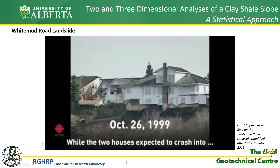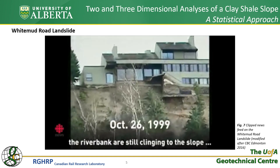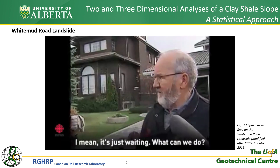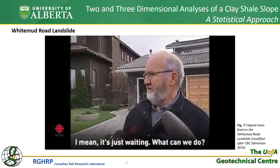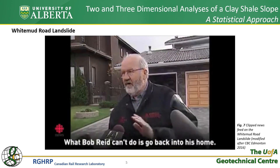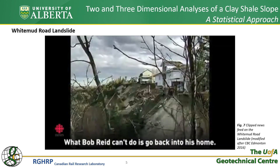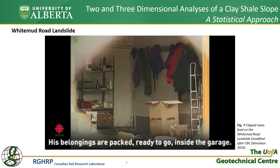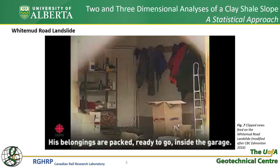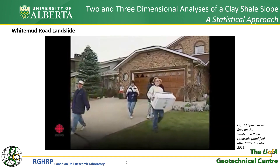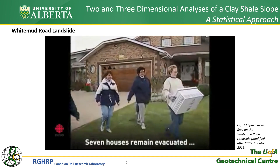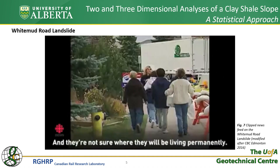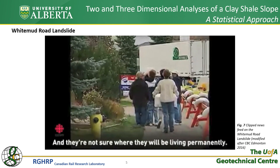While the two houses expected to crash into the riverbank are still clinging to the slope, the owners have less to cling to. What Bob Reed can't do is go back into his home — it's teetering on the edge of the bank. His belongings are packed, ready to go inside the garage. Seven houses remain evacuated. The Carters were lucky — they're taking their possessions with them, and they're not sure where they will be living permanently.